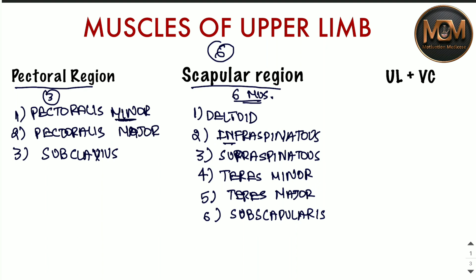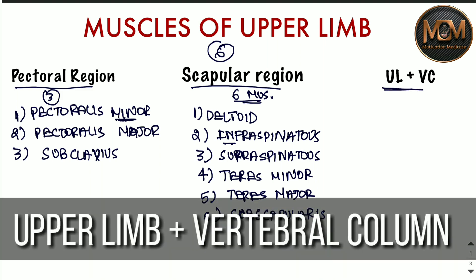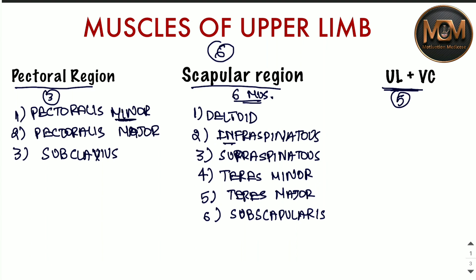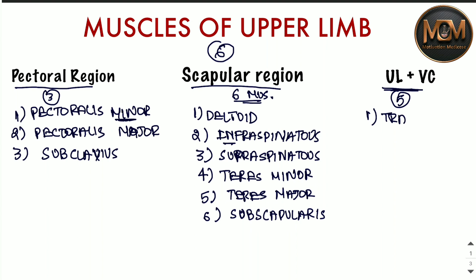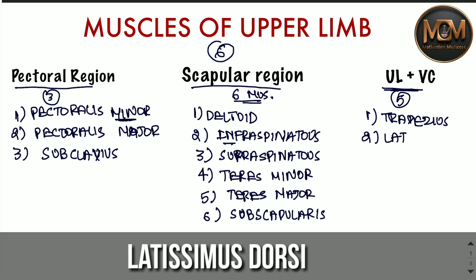Now let's talk about the muscles that connect the upper limb to the vertebral column. We have five muscles here. The first one is trapezius, and the second one is latissimus dorsi.